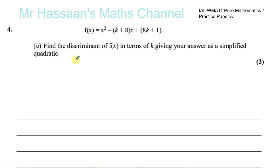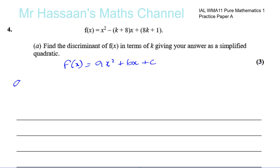This is a quadratic equation already — x squared minus (k plus 8)x plus 8k plus 1 — so it's in the form f of x equals ax squared plus bx plus c. In this case, a is equal to 1, and b is equal to minus (k plus 8) — be careful about that. And c is equal to 8k plus 1.